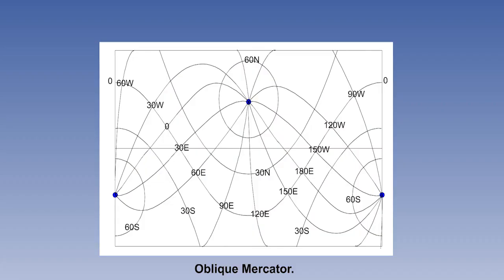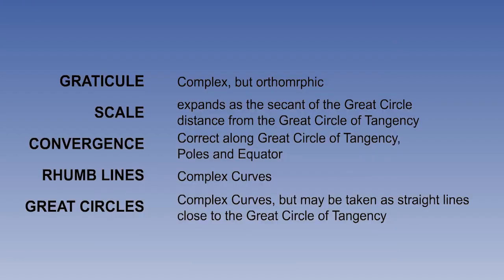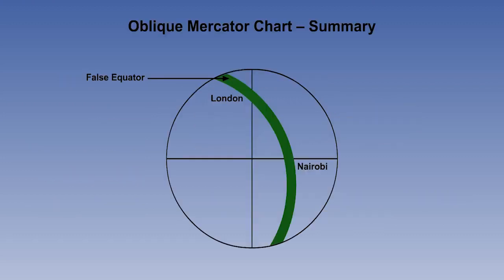The Graticule is orthomorphic. This projection has all the advantages we require, and almost no drawbacks. This completes our study of the oblique Mercator, and with it, our study of maps and charts.